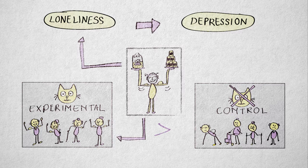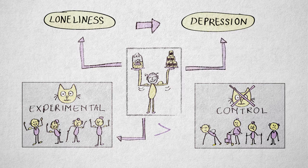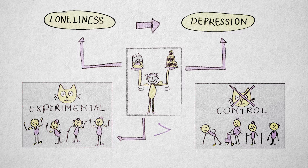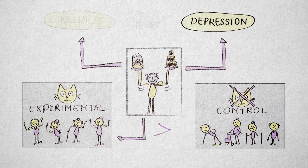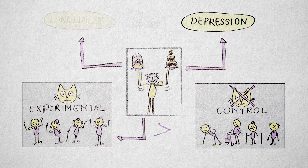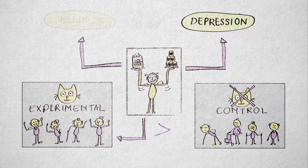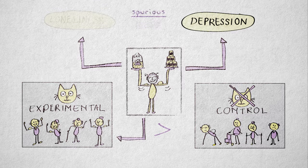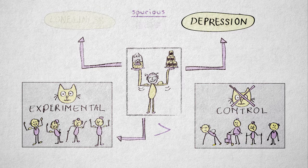Suppose physical activity is also causally related to depression. Being more active lowers depression. Well, then physical activity, and not loneliness, may account for a lower depression score in the experimental cat group. The relation between loneliness and depression is said to be spurious. The relation can be explained by the confounding variable, physical activity.